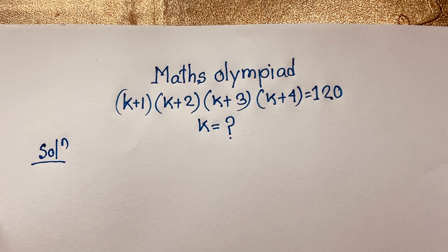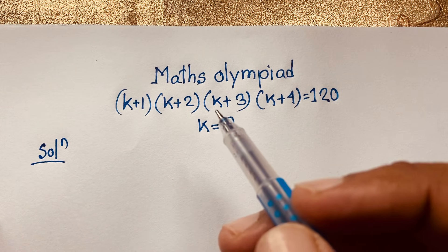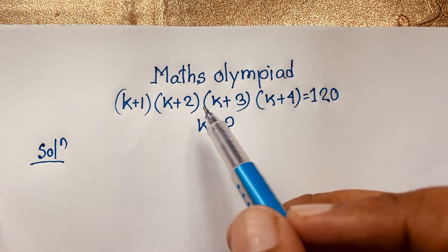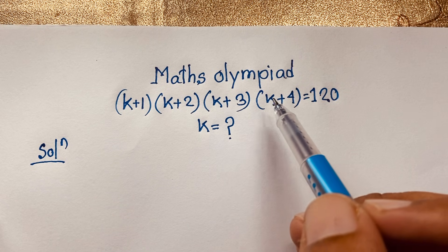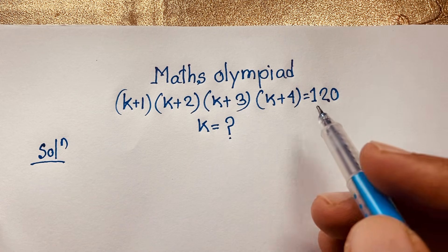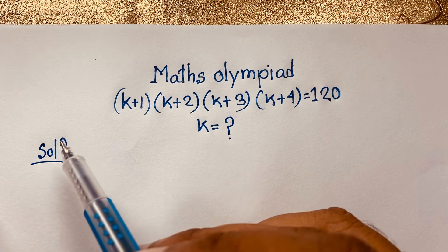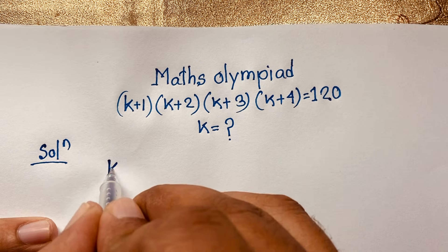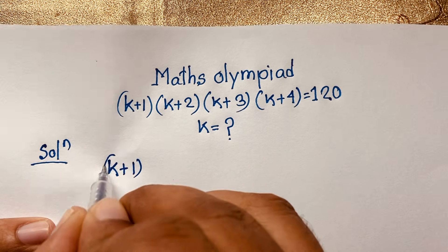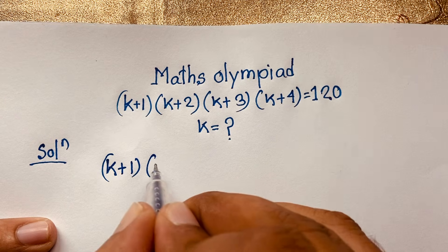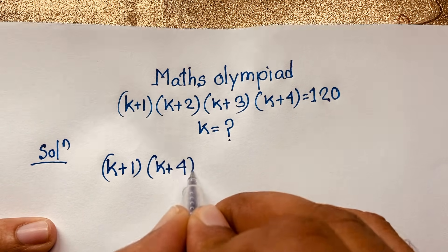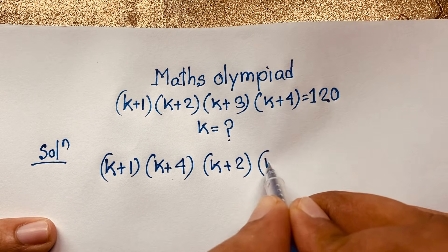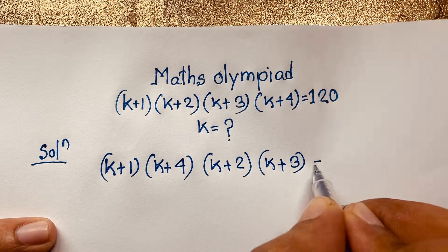Hello everyone, welcome to my YouTube channel. Today we have solved an interesting Math Olympiad question which is (k+1)(k+2)(k+3)(k+4) = 120. What is k? I will solve this question using an easy method. First, I rearrange: I take (k+1)(k+4) times (k+2)(k+3), which equals 120.